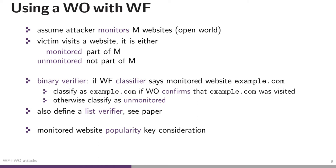In the paper, we define two verifiers that can be used together with any website fingerprinting attack: a binary verifier and a list verifier. The list verifier is just a binary verifier in a loop — please see the paper for that. The binary verifier is quite simple: if the website classifier says a monitored website was visited, such as example.com, we only accept that positive classification when the website oracle confirms that the monitored website was visited. If the oracle doesn't confirm it, we classify it as unmonitored, even though the classifier said otherwise.